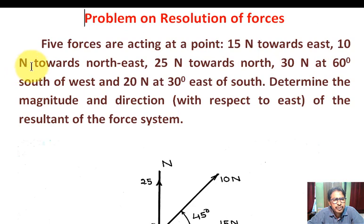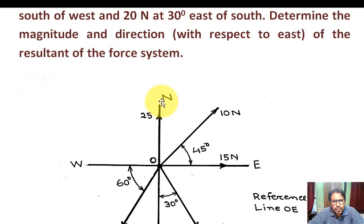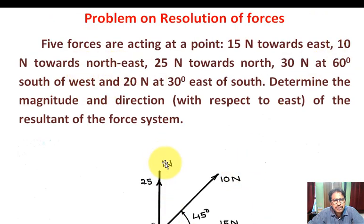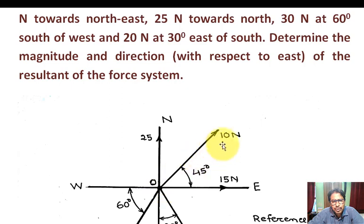Number two: 10 Newton towards north-east. North-east means this is north, this is east — towards north-east means the middle of north and east, so it is 45 degrees with OE. This is the direction of the force; magnitude is 10 Newton.